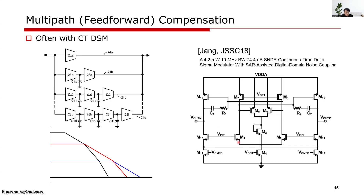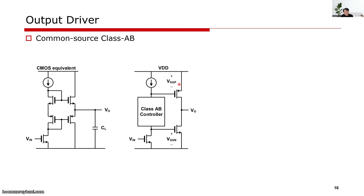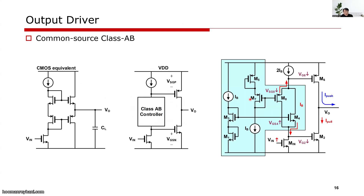Some applications, like display drivers, require an energy-efficient output driving stage. This is a typical class-AB push-pull output driving stage. But at low supply voltage, we cannot utilize the source-follower-configured class-AB. So at low supply voltage, we need to use a common-source-configured class-AB, and we need to design the class-AB controller for that. The implementation and its operational principle will be discussed in the course.